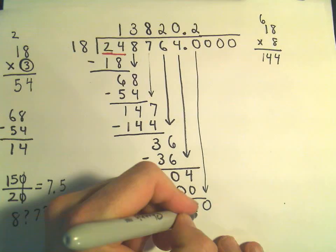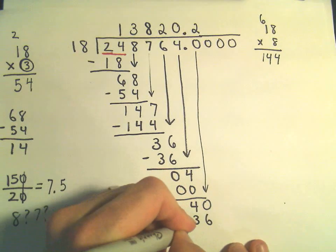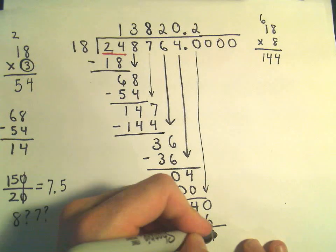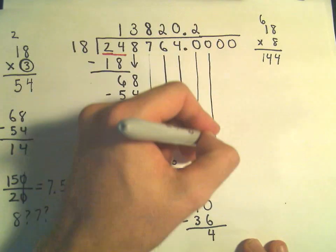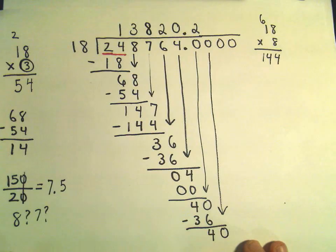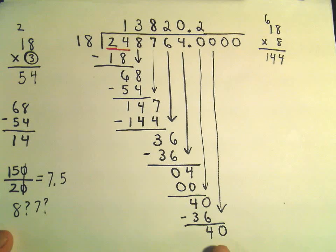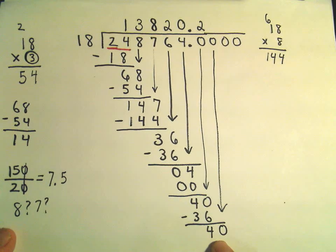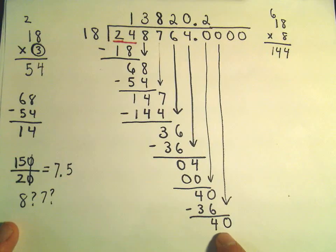Well, 2 times 18, again, is going to be 36. And if we subtract, we're going to get a 4. And again, if we drop down our next 0, again, we're basically left with the number 40 again. So I think we're kind of caught in a little infinite loop here now.